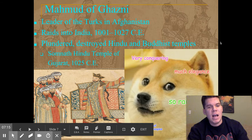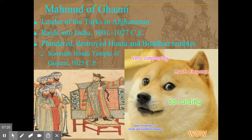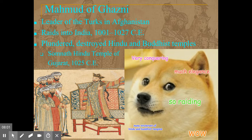That brings us to Mahmoud of Ghazni. He was the leader of the Turks in Afghanistan and one of the leading raiders into India. He was a pretty destructive but also eloquent figure — he burned down temples and destroyed places of learning, yet was relatively tolerant of Hindus and Buddhists as long as they submitted to his authority. He destroyed the Sumnath Hindu temple of Gujarat in 1025.